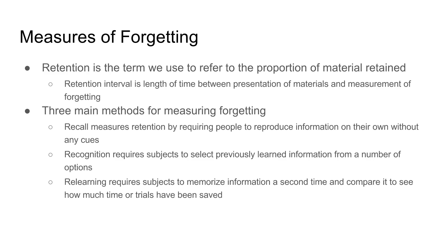There are things we use to measure how much we forget or remember. The main term is retention, which tells us what proportion of material we actually remember. Another term often used is retention interval — the amount of time that passes between when information is presented and when we're asked to measure how much we've forgotten. For example, if you learn a concept on Tuesday and are asked about it on Saturday, those days in between are the retention interval.